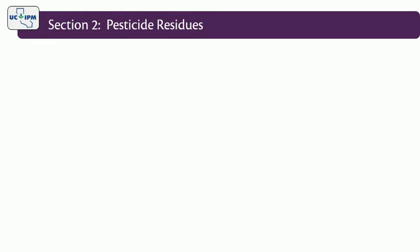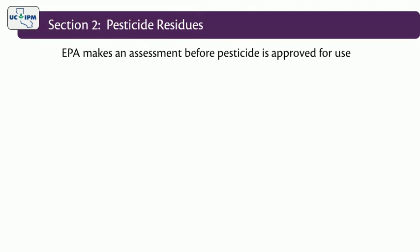Before a pesticide is even approved for use on a specific crop, EPA makes an assessment to make sure it will not pose an unreasonable risk to humans or the environment. This is known as a risk assessment.